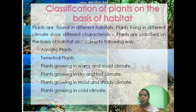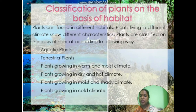Classification of plants on the basis of habitat: plants are found in different habitats. Plants living in different climates show different characteristics. Plants are classified on the basis of habitat in the following ways: aquatic plants and terrestrial plants.